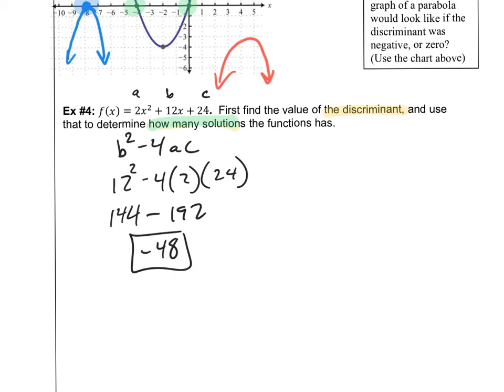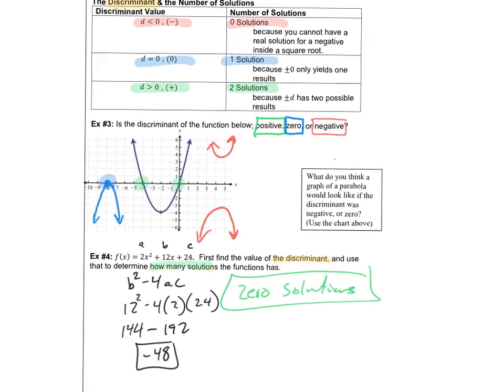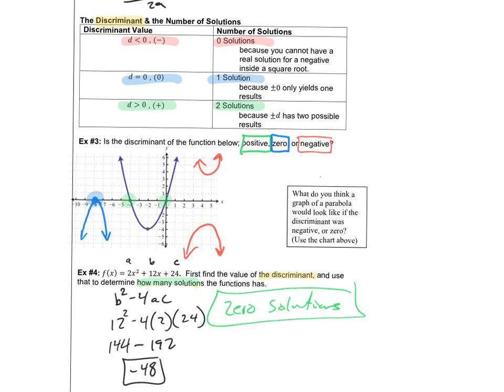Therefore, how many solutions does it have? Well, it has zero solutions. And just to recap, how do I know that it has zero solutions? Let's go back to this handy chart. This is a really handy chart for you to have. Look, remember, if the discriminant is negative, if it's less than zero, then it has zero solutions. Simple as can be.